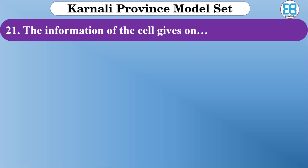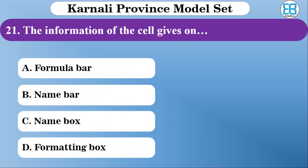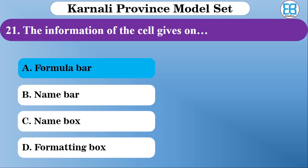The information of a cell gives us the cell format. The options are formula bar, name box, and formatting box. The correct option is formula bar.